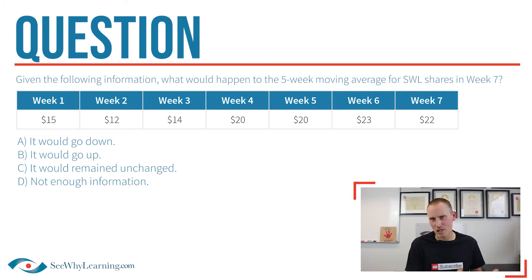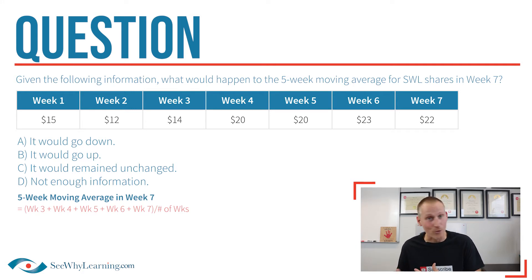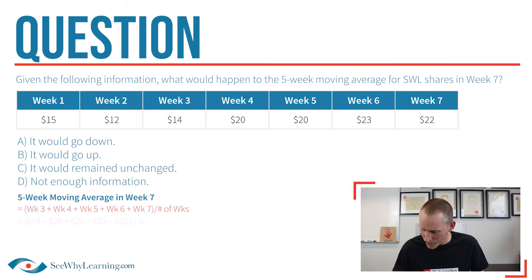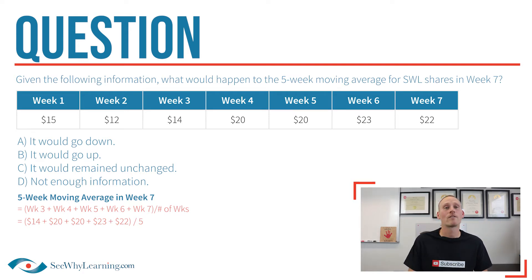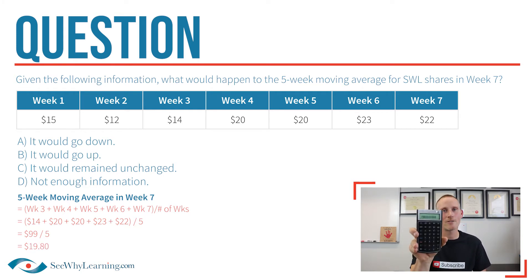Let's start by actually calculating the five-week moving average price for these shares. To do that, we just add up all the prices for the last five weeks — weeks three to seven in this case — and then we divide it by the number of weeks, which of course is five. So we do 14 plus 20 plus 20 plus 23 plus 22, and that gives us $99. And then we divide by five, and that gives us $19.80.